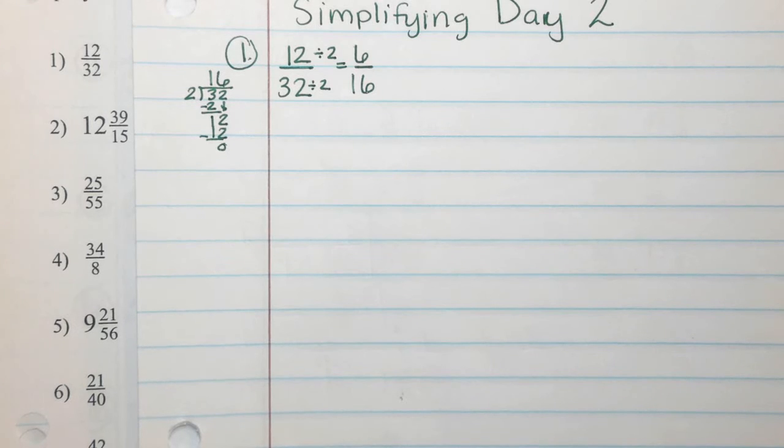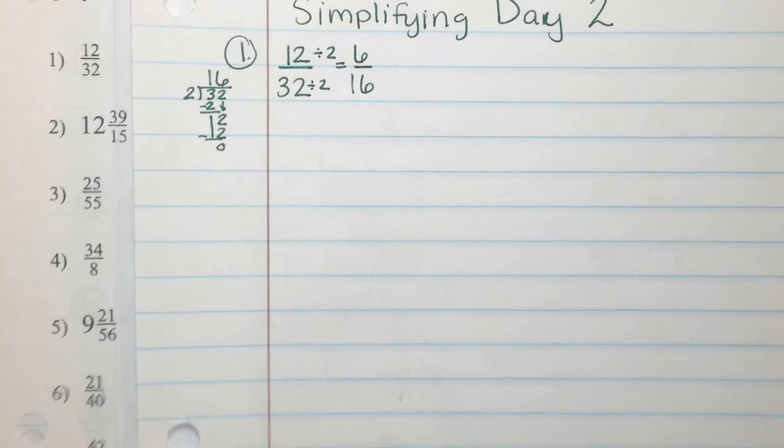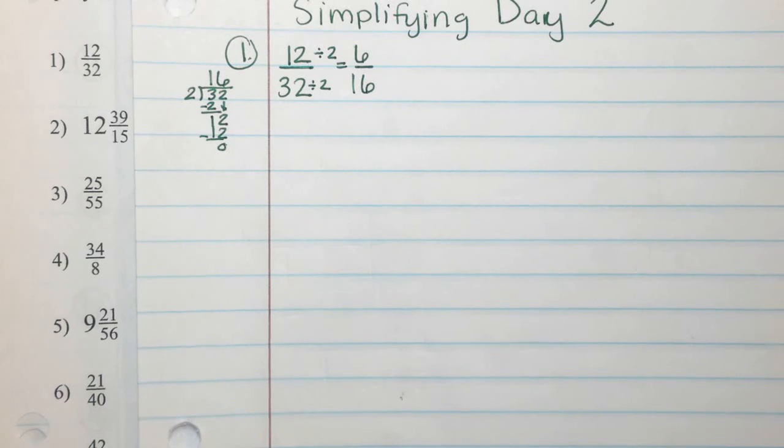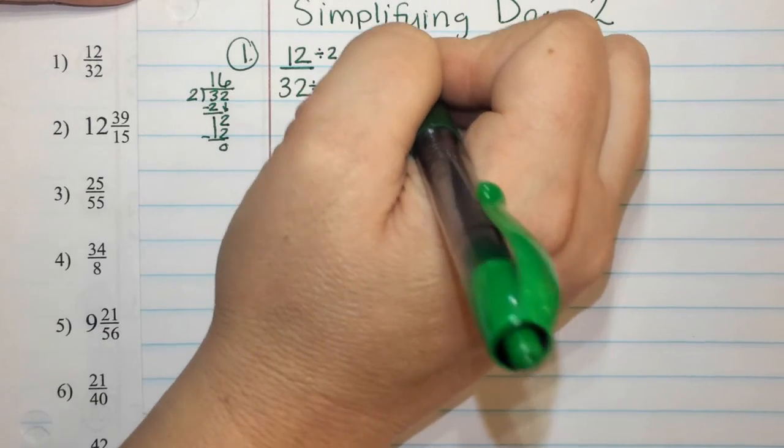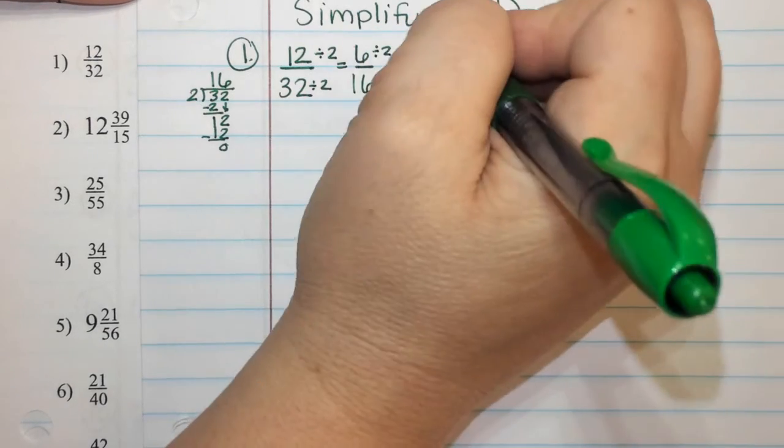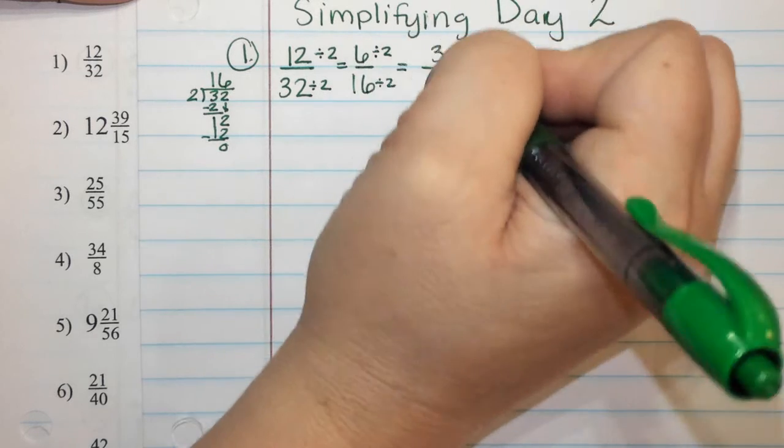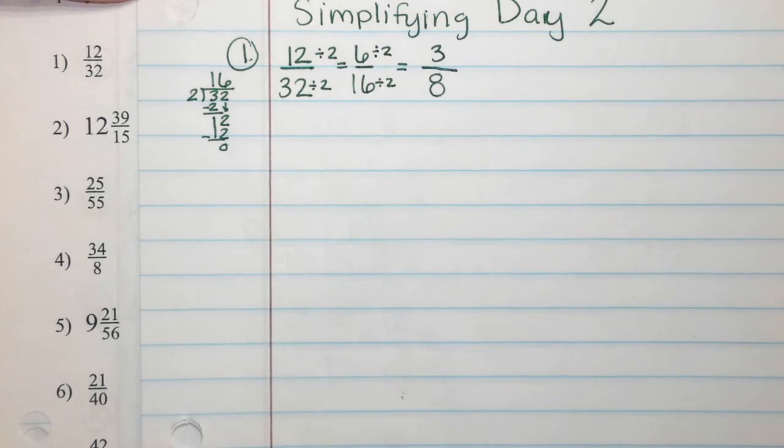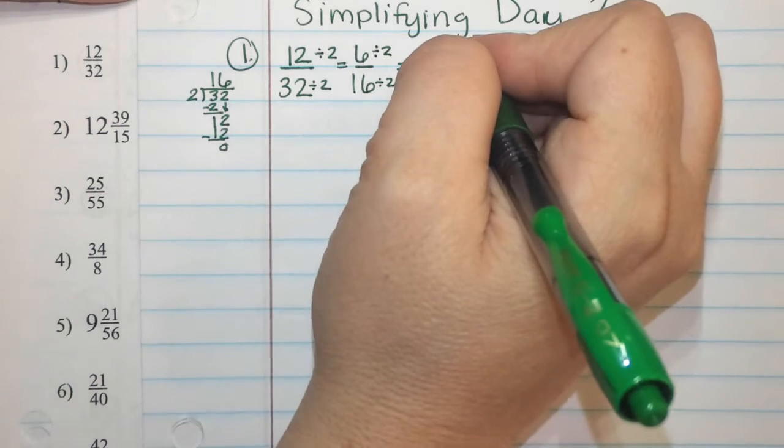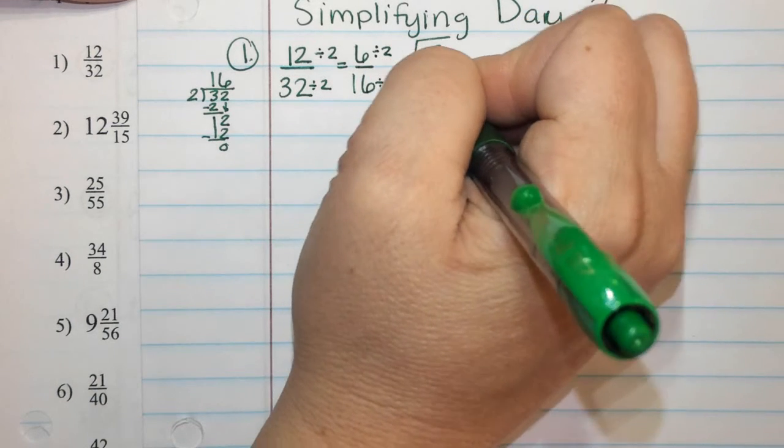Six and 16. Is that a good way to leave my answer? No. What can I do now? What can I do next? Using what number? Two. We can use two again. Six divided by two is three. And 16 divided by two is eight. Is that a good way to leave my answer? Yes. So there's my answer for number one.